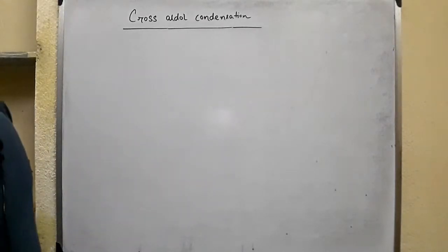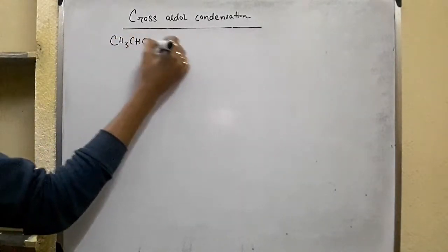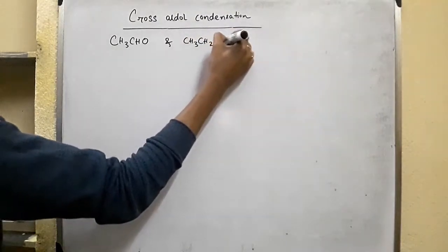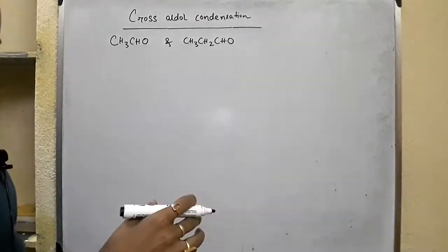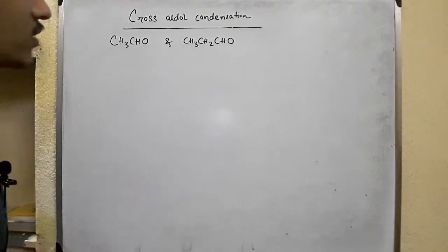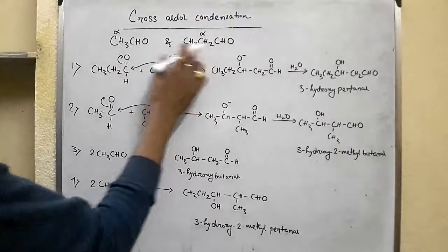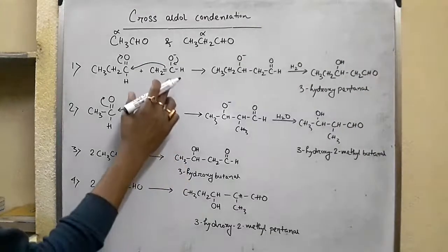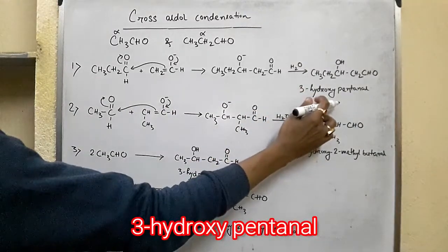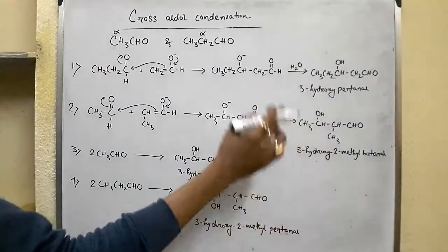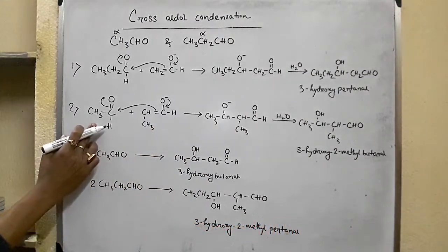Such condensation can give a mixture of products. For example, if you take acetaldehyde (ethanal) and propanal and when they react in presence of a dilute base, we will have four different products overall. These are the four different products formed. Either one of them can form the enolate ion. When the enolate ion of ethanal attacks the propanal, we will have 3-hydroxypentanal, and that is different from the product formed by the attack of the enolate ion of propanal on the ethanal.